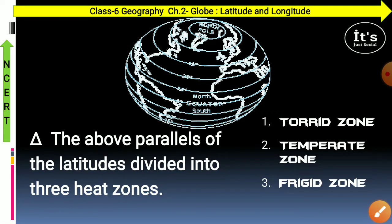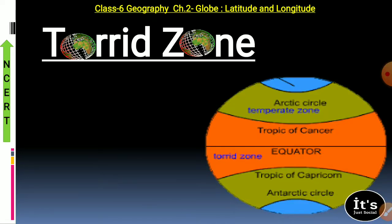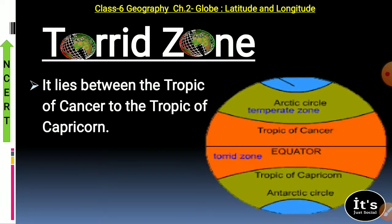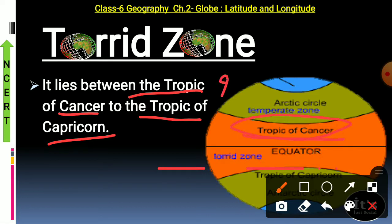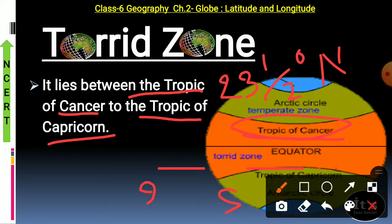Let us understand each of these heat zones in detail. The first one is the torrid zone. This heat zone lies between the Tropic of Cancer to the Tropic of Capricorn. You should know about latitudes and longitudes — the Tropic of Cancer is towards the north at 23.5 degrees, and the Tropic of Capricorn is towards the south at 23.5 degrees.